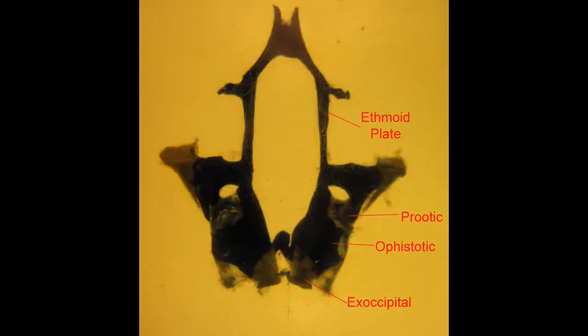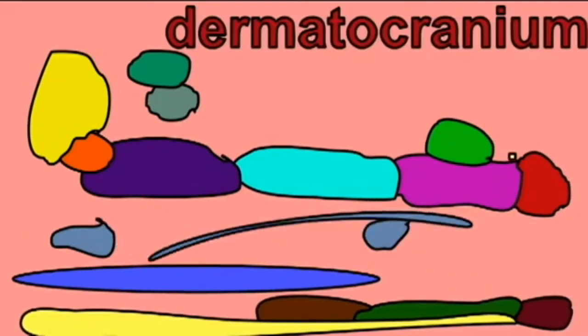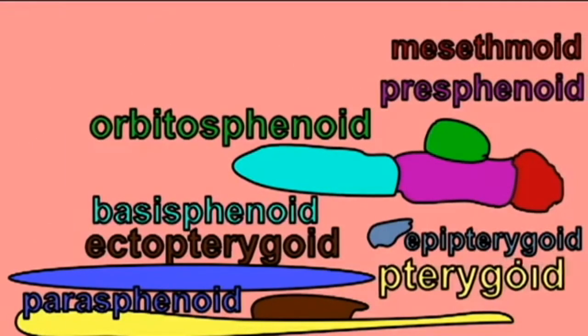The third region of the skull is the cartilaginous chondrocranium, which in these salamanders remains cartilaginous, although in humans this cartilage is converted to regions of the ethmoid, sphenoid, temporal, and occipital bones.